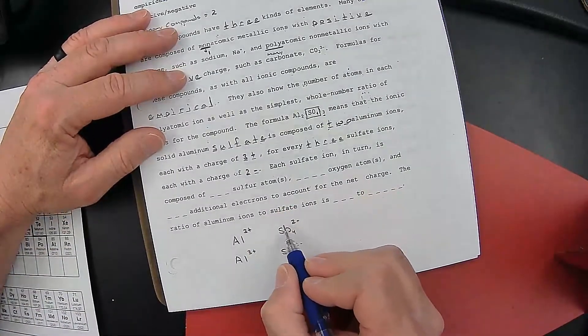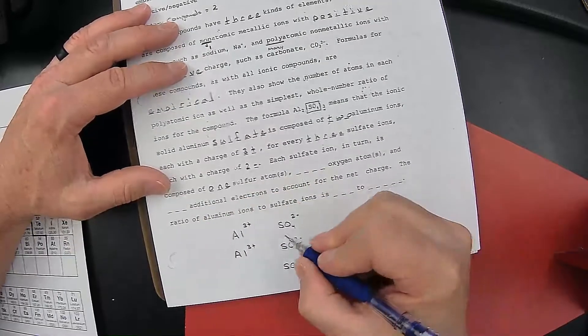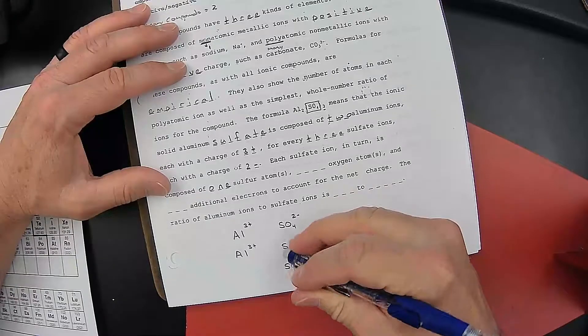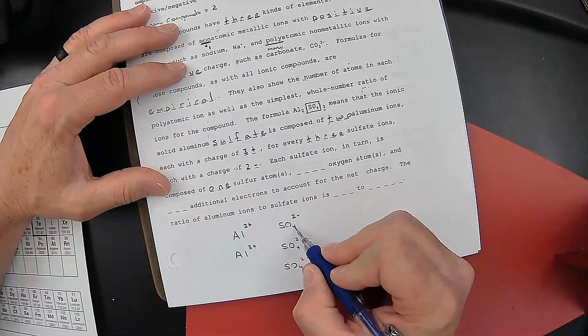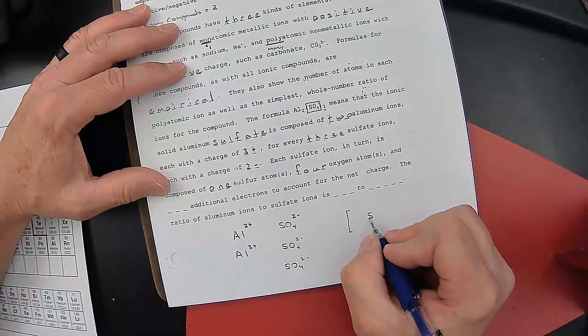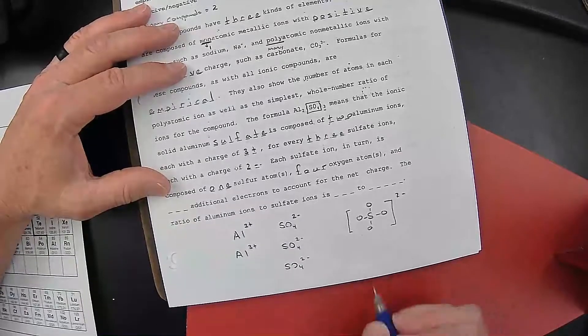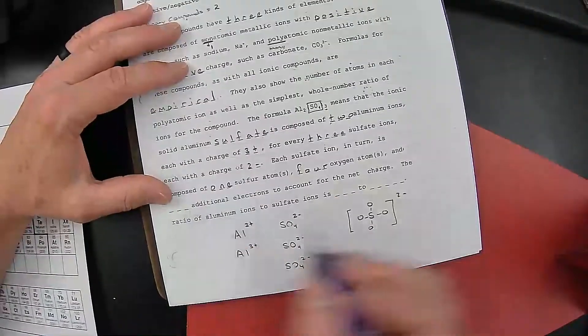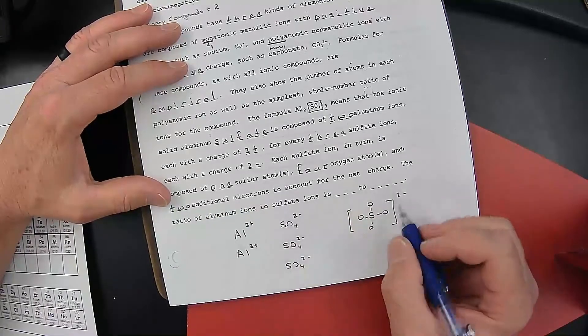Each sulfate, now we're looking at just the sulfate, in turn, is composed of, well, how many sulfur atoms are there? There's only one. In chemistry, whenever there's a one, we don't write it. Technically, this could be written as S1O4, but it's customary that we don't write the one. We just leave it off. So it's just simply SO4. One sulfur atom. How many oxygen atoms? This four indicates four oxygen atoms. So if we were to draw this, really it's an S connected to four O's with a 2 minus charge, and it's this three times. So we'd have it again and again. So each sulfate, in turn, is composed of one sulfur, four oxygen atoms, and how many additional electrons? Two additional electrons to account for the net charge of the 2 minus.